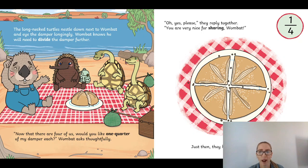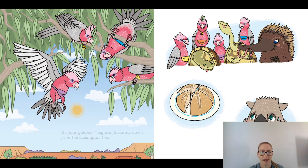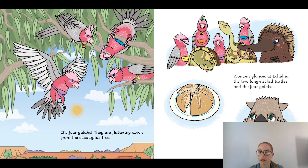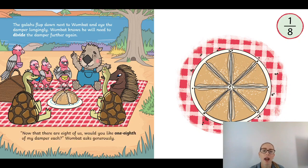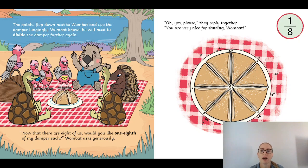Just then they heard four animals chirping: 'G'day! G'day! G'day! G'day!' It's four galahs — they're fluttering down from the eucalyptus tree. Wombat glances at Echidna and the two long-neck turtles and the four galahs, and then at his damper. The galahs flock down next to Wombat and eye the damper longingly. Wombat knows that he'll need to divide the damper further again. 'Now that there are eight of us, would you like one eighth of my damper each?' Wombat asked generously. 'Oh yes,' they replied together. 'You are very nice for sharing, Wombat!' Wombat cut the damper, dividing it equally into eight pieces.